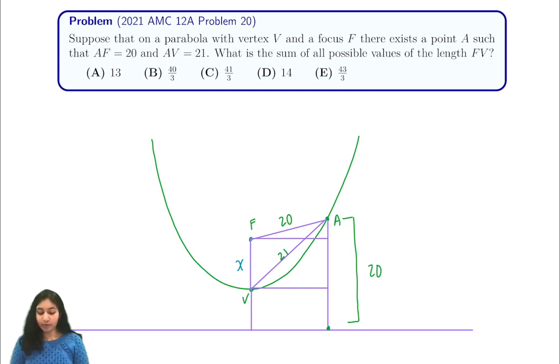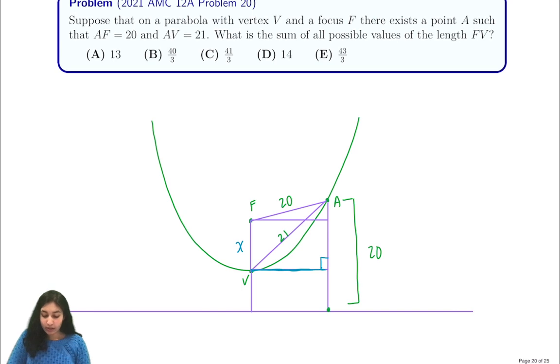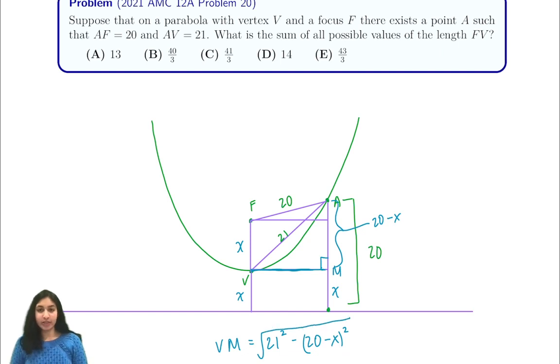So we start off by calculating this length in terms of our triangle with A and V. So we know that this length right here is 20 minus X, since this is X, again, by definition of a focus and directrix. So we have that our length V, let's say this is some point M, we have that VM is equal to the square root of 21 squared minus 20 minus X squared, by Pythagorean theorem.